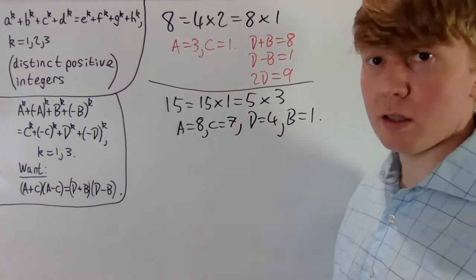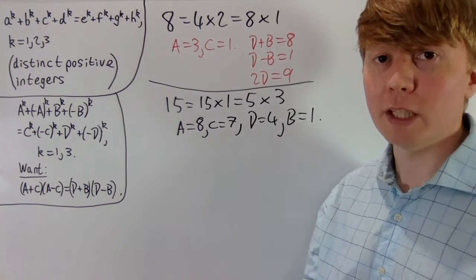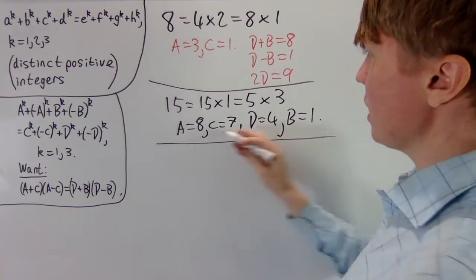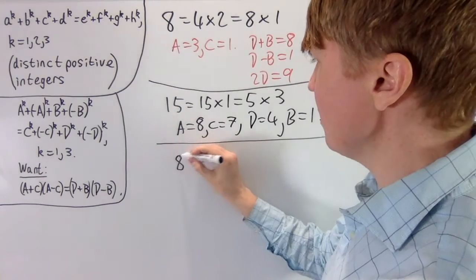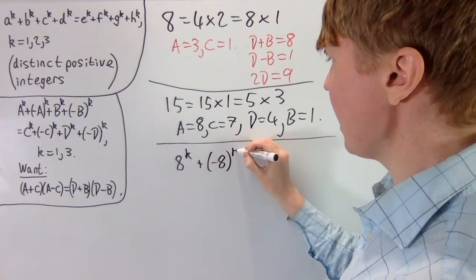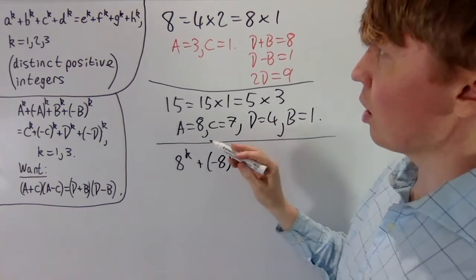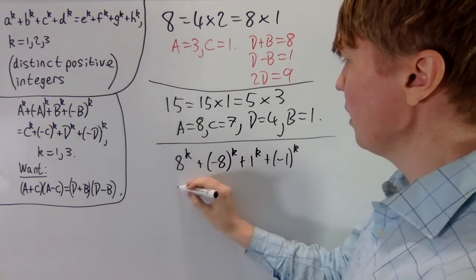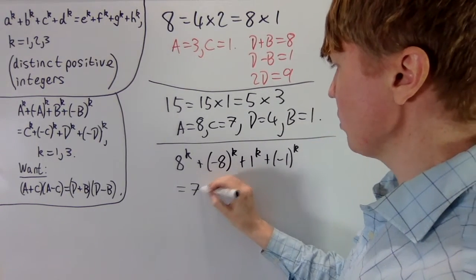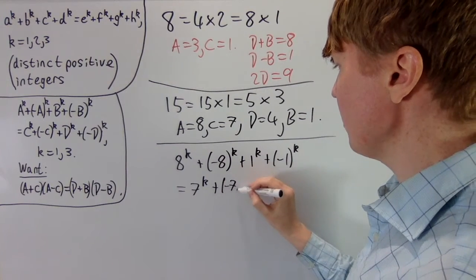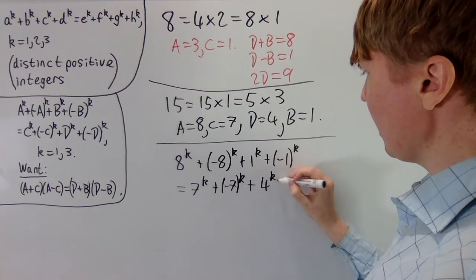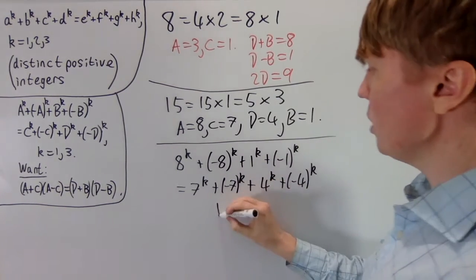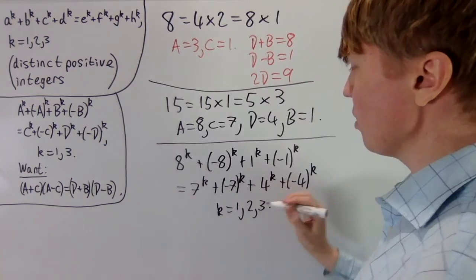We don't need to check this works since we've done the algebra. In our original equation this gives: 8^k + (−8)^k + 1^k + (−1)^k = 7^k + (−7)^k + 4^k + (−4)^k, for k = 1, 2, and 3. The only issue now is that we have negative numbers.